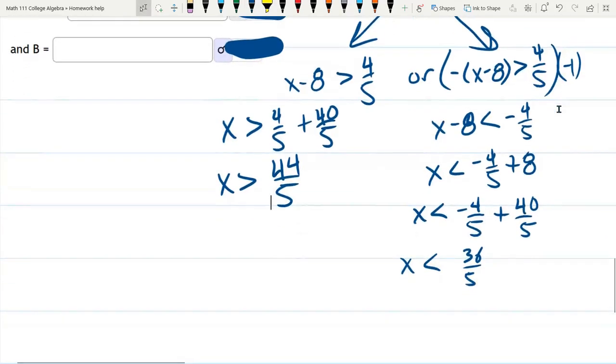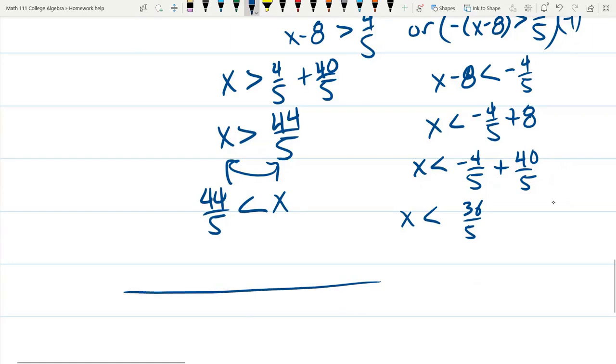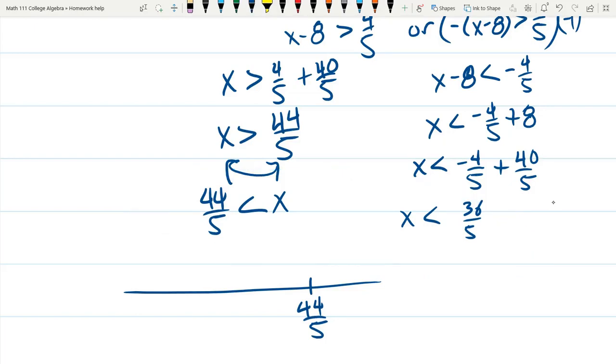Let's plot these on a number line. And I'm going to take the mirror image of this. So we have 44 fifths is less than x. Alright, here's 44 fifths. Now you don't need to really care about where 0 is because 0 is not one of those two values. But it's important to know 36 fifths is less than 44 fifths. So it's really important that you don't want to write 36 fifths to the right of 44 fifths because it's smaller.